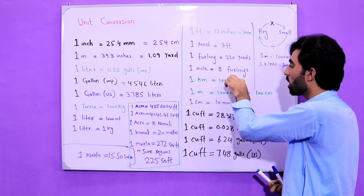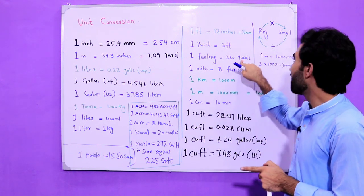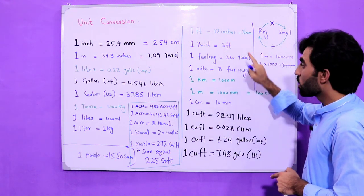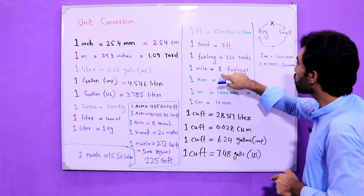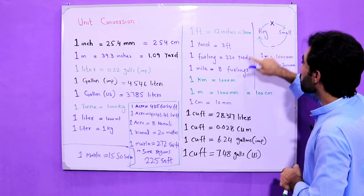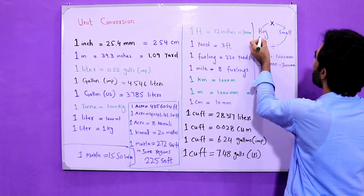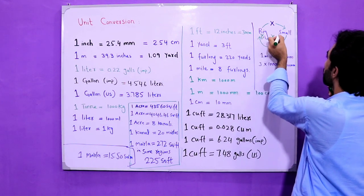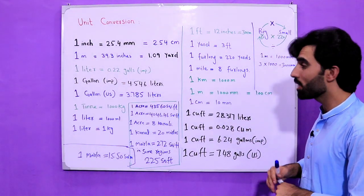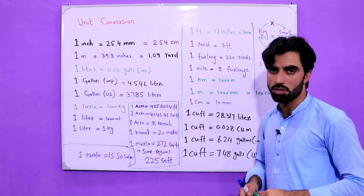One mile equals 8 furlongs, and one furlong equals 220 yards. Now, furlong is big and yard is small. So if I want to convert from furlongs to yards, I go from big to small, so I multiply: 8 furlongs multiplied by 220 gives the total yards — because 220 yards is in one furlong.